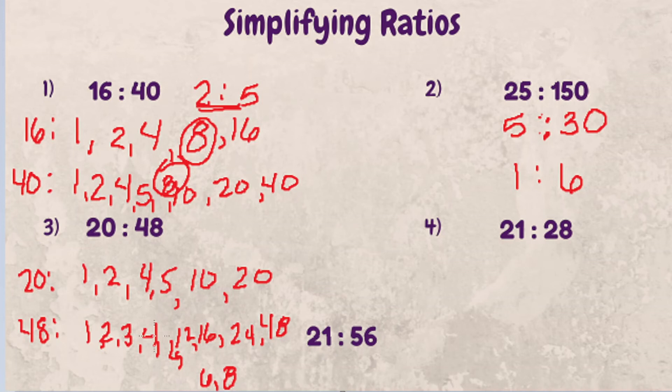So I can see right off the bat that 4 is our greatest common factor. So let's divide 20 by 4, we get 5. Let's divide 48 by 4 and we get 12. 5 to 12 is our simplified or reduced ratio.